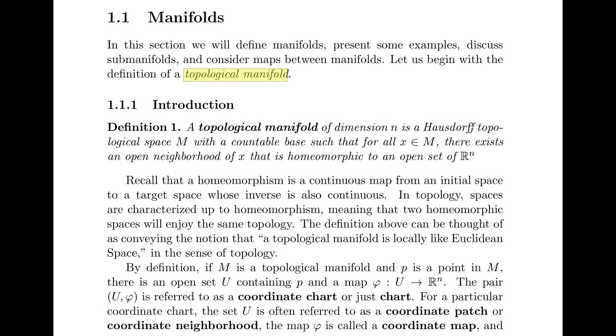A topological manifold is a Hausdorff topological space M of dimension n with a countable base such that for all x in M, there's an open neighborhood of x that is homeomorphic to an open set of R^n. Recall that a homeomorphism is just a continuous map from an initial space to a target space and its inverse is also continuous.